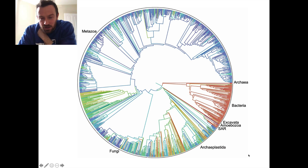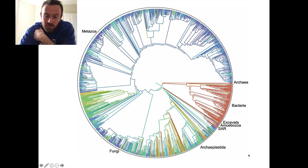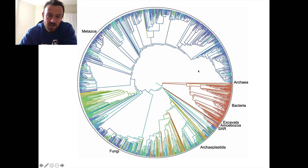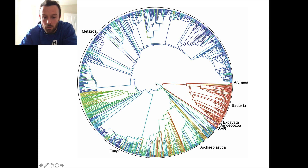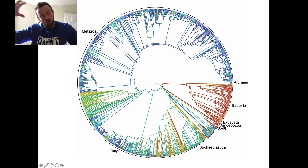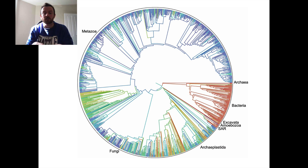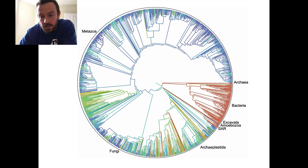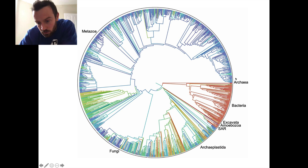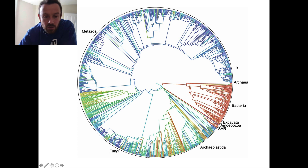I wanted to start with this image because it's one of my favourite images in all of biology. This is a map or diagram representing how every single living creature is completely linked and related to every single other living creature on the planet. It spirals out from the very centre, where the first life — the last universal common ancestor — is found. As it moves outwards we're moving through time, closer to the present day, and when we reach the outer circle it's all the life forms around today. We're just one tiny little end point of all these branches.